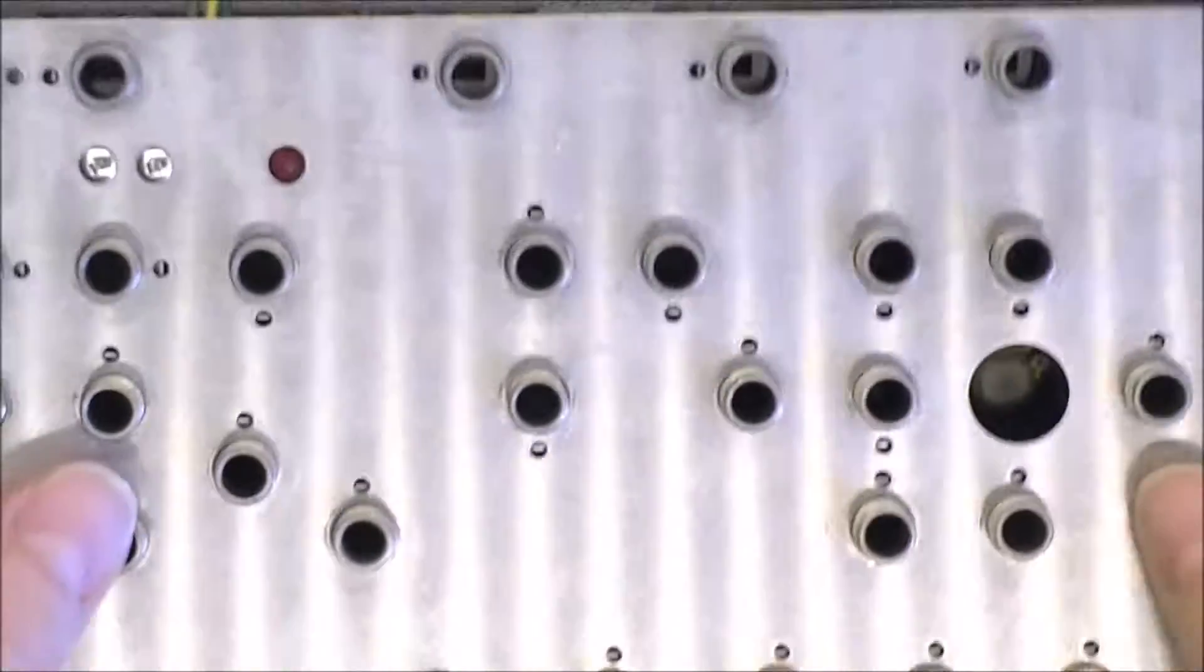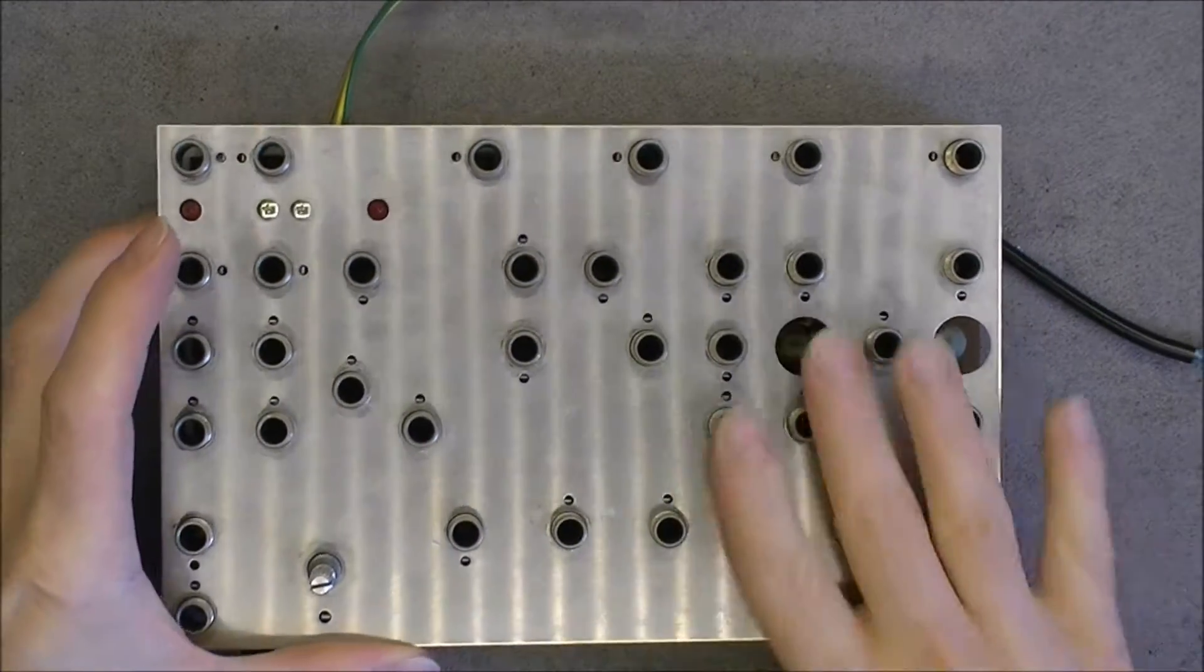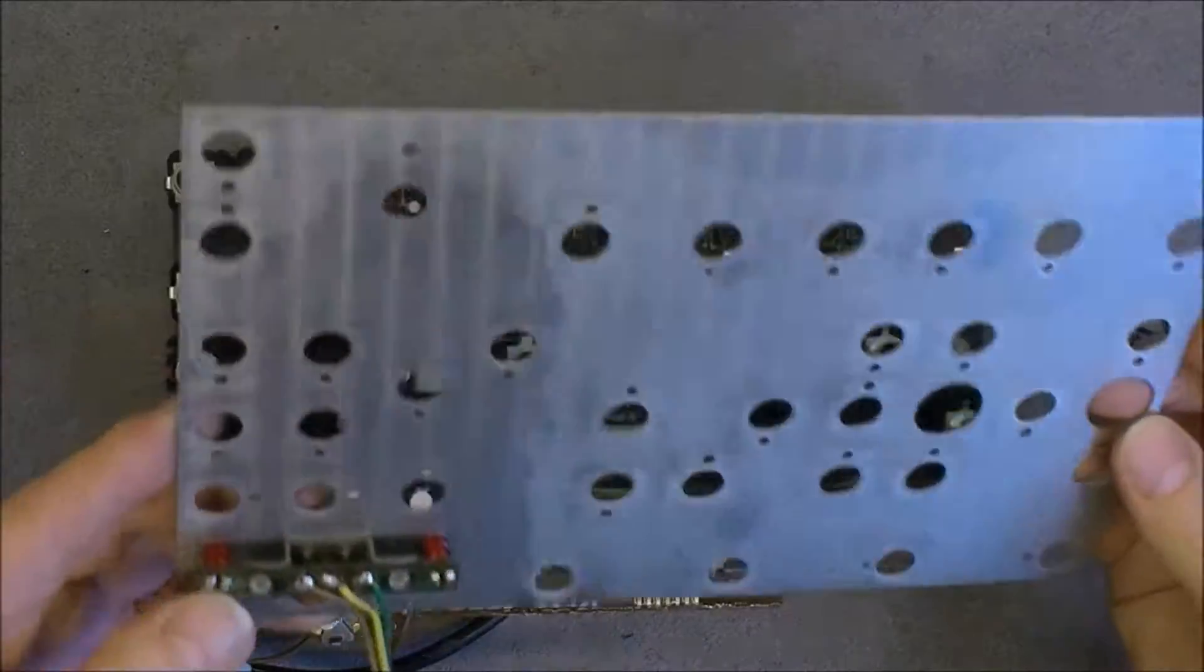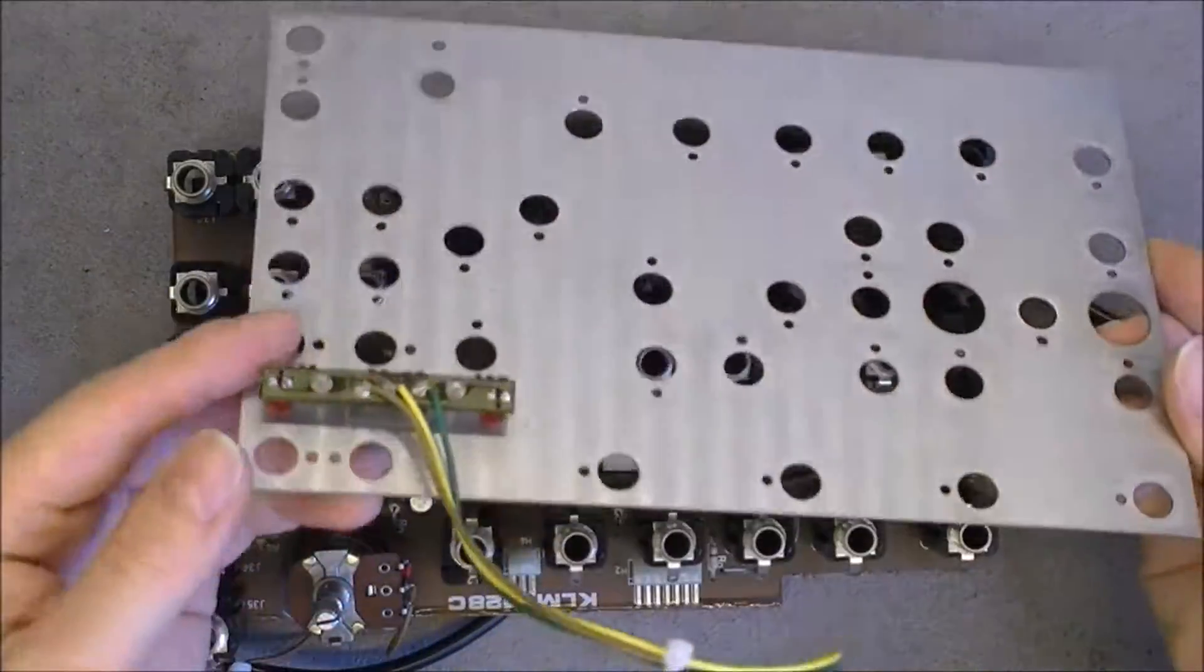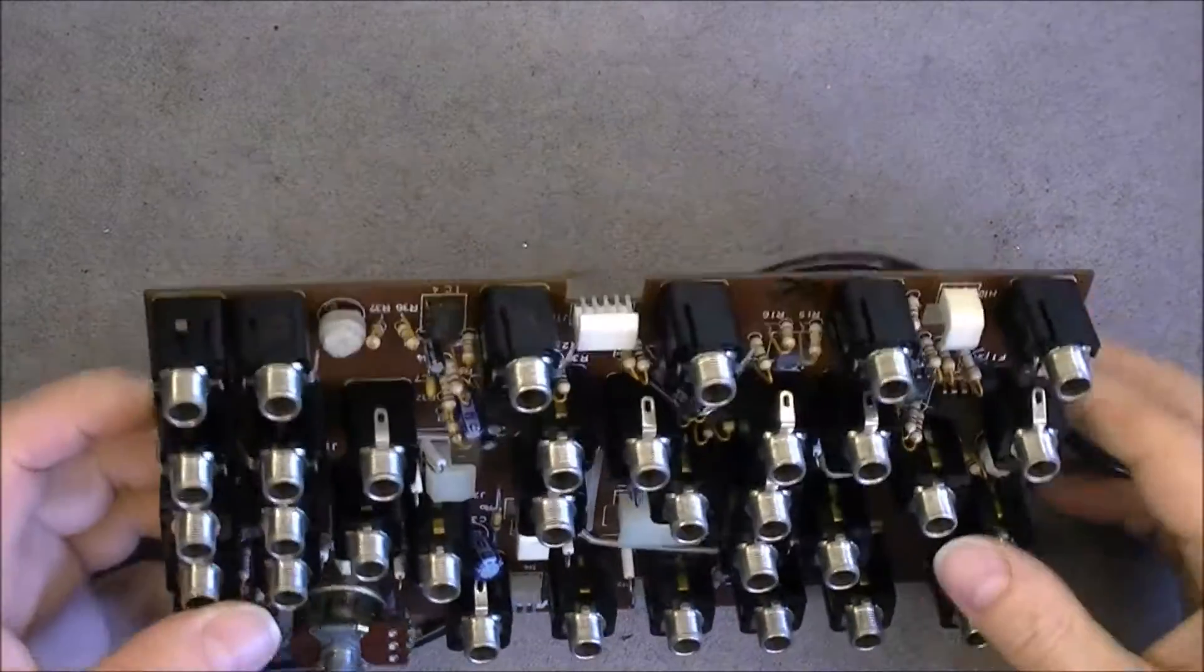Last one, the jacks PCB. As you can see I unbolted all the jacks so I can remove this aluminum plate. Here you have a little PCB with two LEDs attached on it, and here is what it looks like.